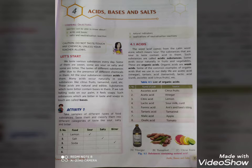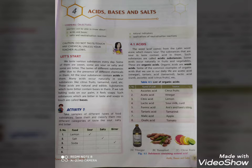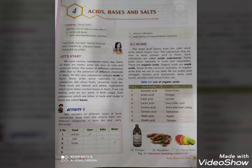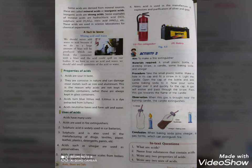Some acidic substances are naturally found in fruits and vegetables. These are called organic acids, and organic acids are weak acids. Some common examples of organic acids we use in our daily life are vinegar, tamarind, curd, etc. And some acids come from mineral sources — these are called mineral acids or inorganic acids. Inorganic acids are strong acids — they are very strong.